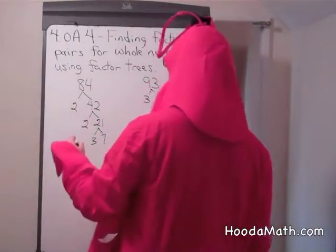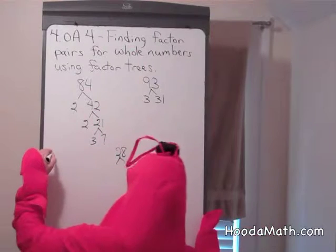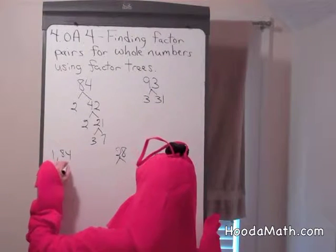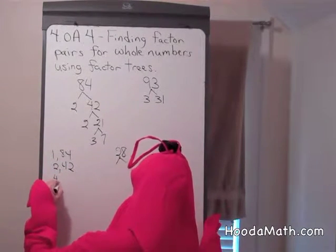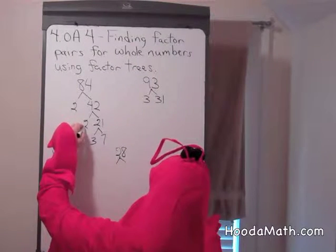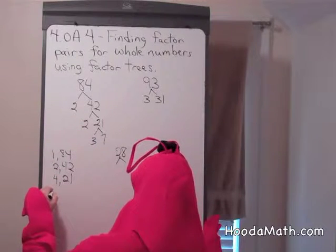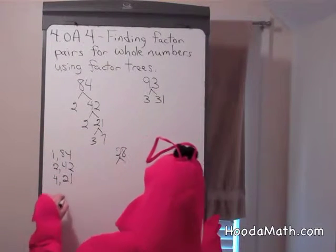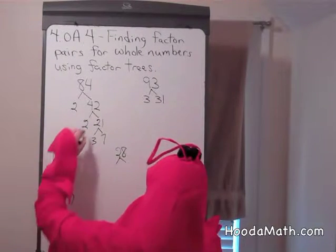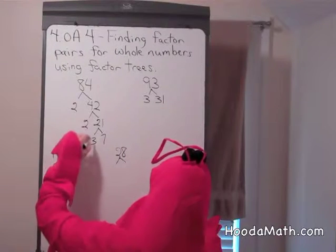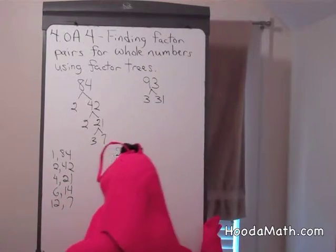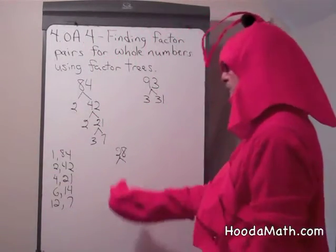Let me write down all the factors of 84 again. We could have 1 and 84; 2 and 42; 4 and 21. We could have 12 and 7. We could also have 6 — since 2 times 3 is 6 — and 6 times 14, because 6 times 2 times 7 is 14. Those are all the whole number factors of 84.